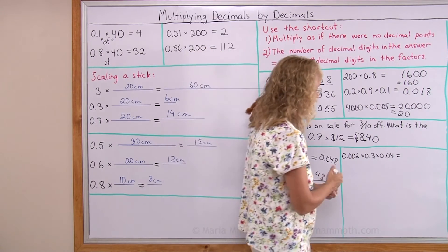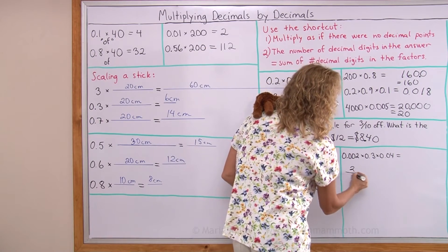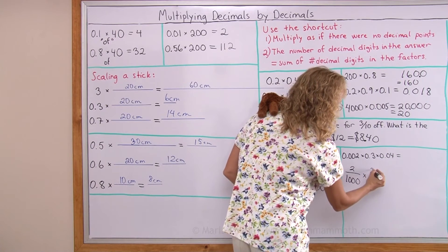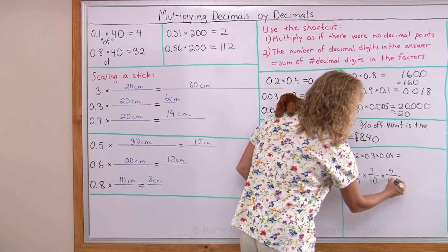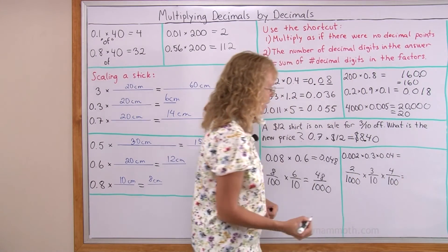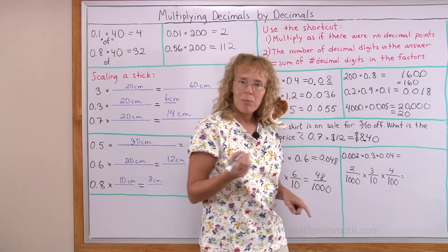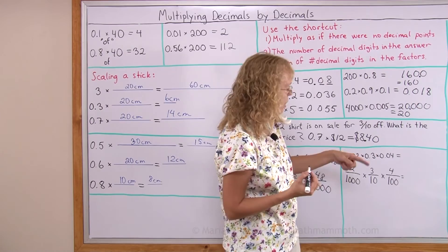Let me show it to you again. Two thousandths times three tenths times four hundredths. Okay. I multiply the top numbers. Two times three times four is twenty-four.